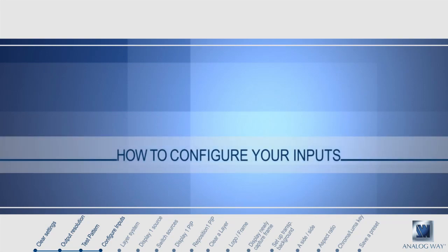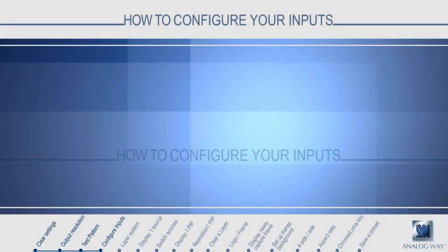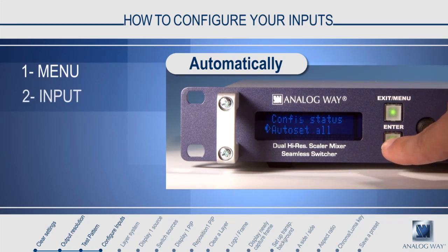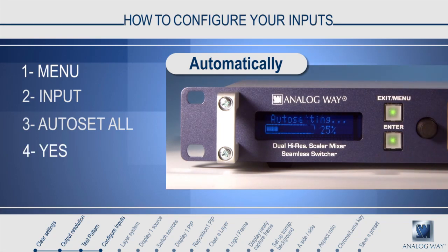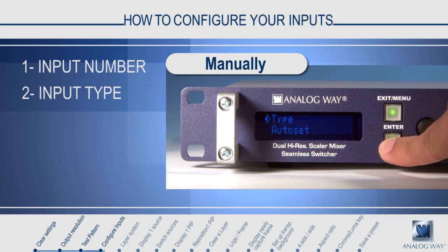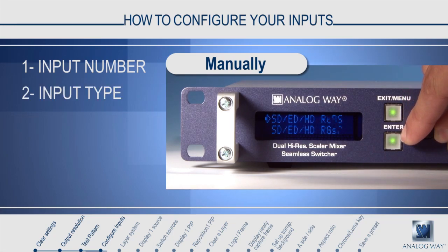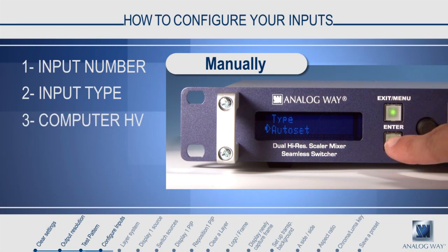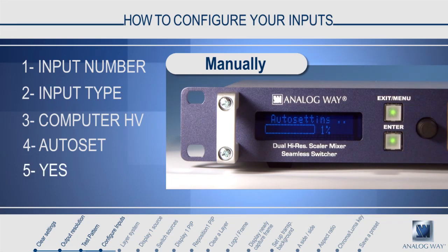How to configure your inputs. To configure the inputs automatically, press menu and enter the input menu. Select the auto set all function and the device will automatically scan all inputs for the available signal type. This process takes a few seconds. To manually configure an input, scroll down to the input number you wish to configure and select input type. Here you can choose which input type to use — for example, if you are using a computer, select computer HV. Or if you would like to auto set one input individually, select the input number and choose the auto set function. This will auto set just this input.